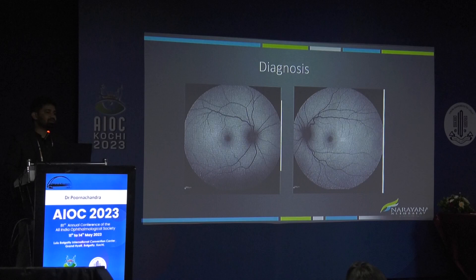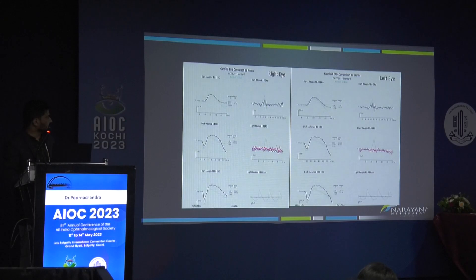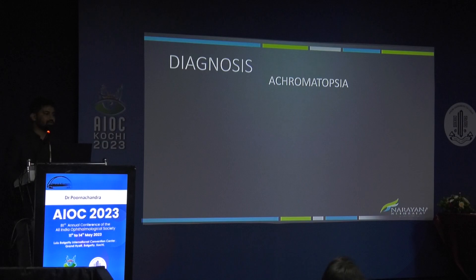The first thing we suspected was malingering — recently married, perhaps not happy. But before labelling any patient as malingering, we must subject them to electrophysiological testing. Looking at the ERG: the dark-adapted responses are completely normal, but the light-adapted responses are undetectable. So although the retina looks normal, the cones throughout the entire retina are dysfunctional. This is a case of achromatopsia, a form of stationary cone dystrophy.